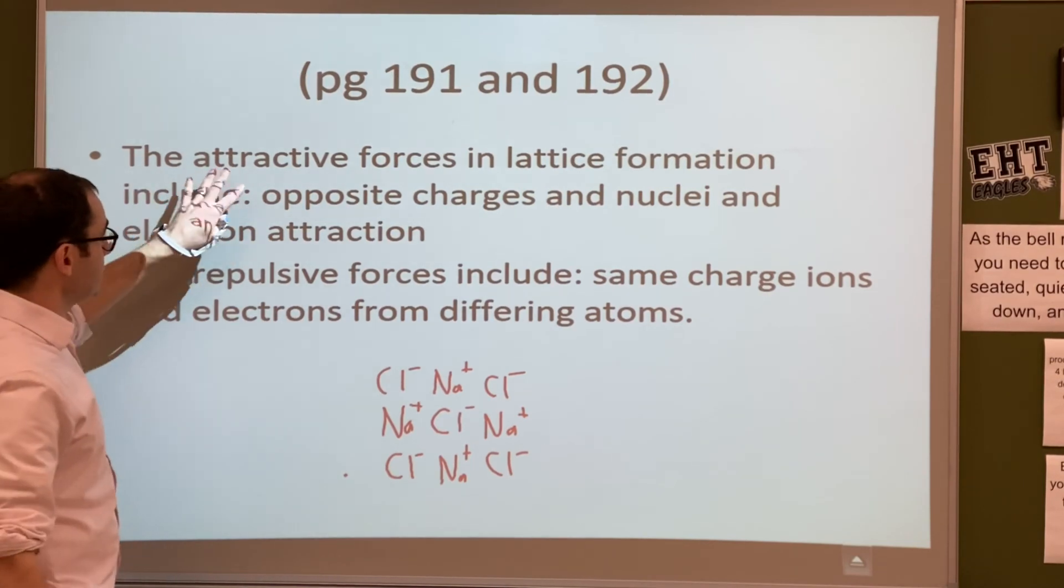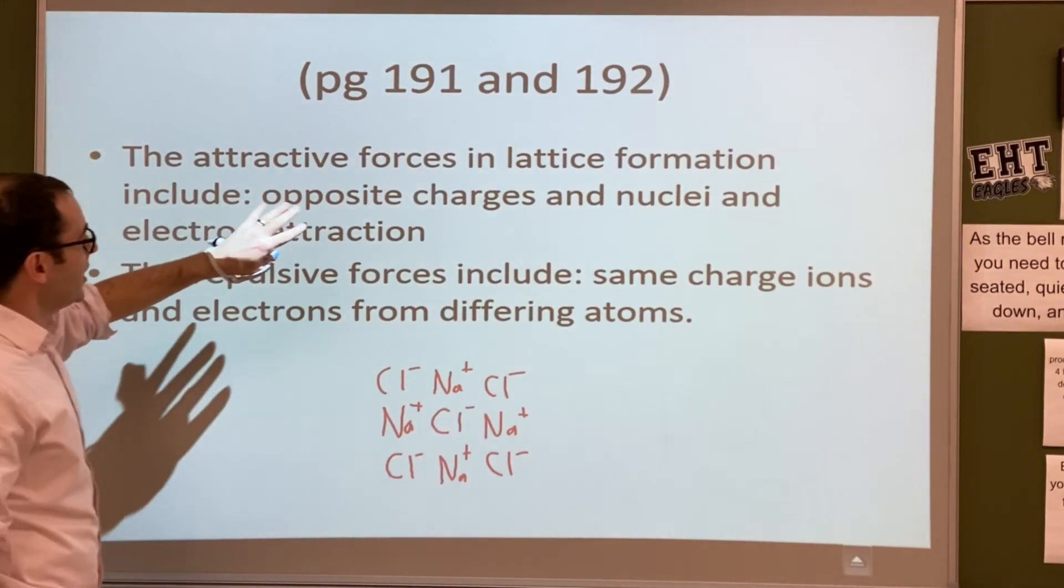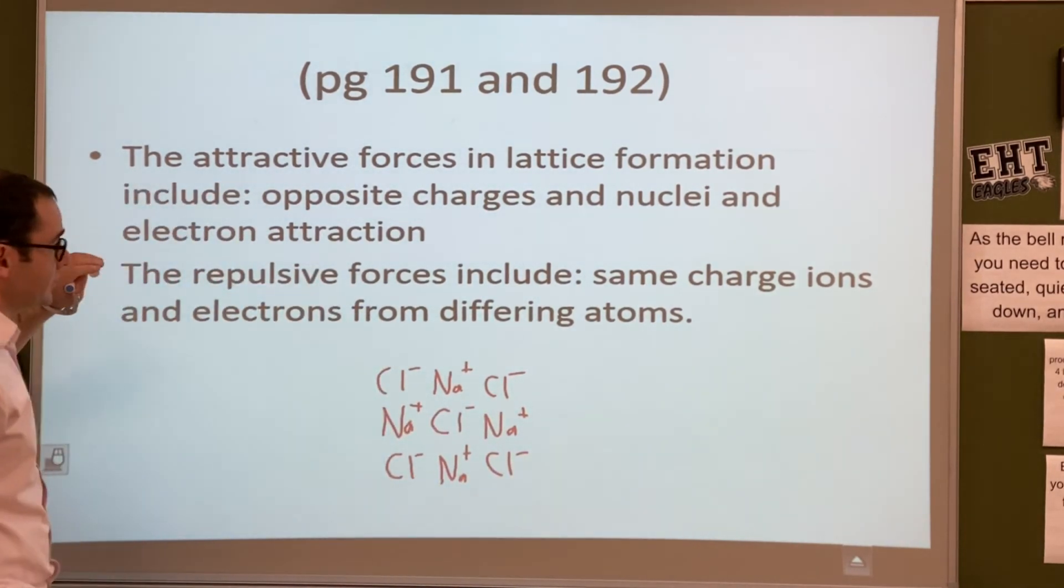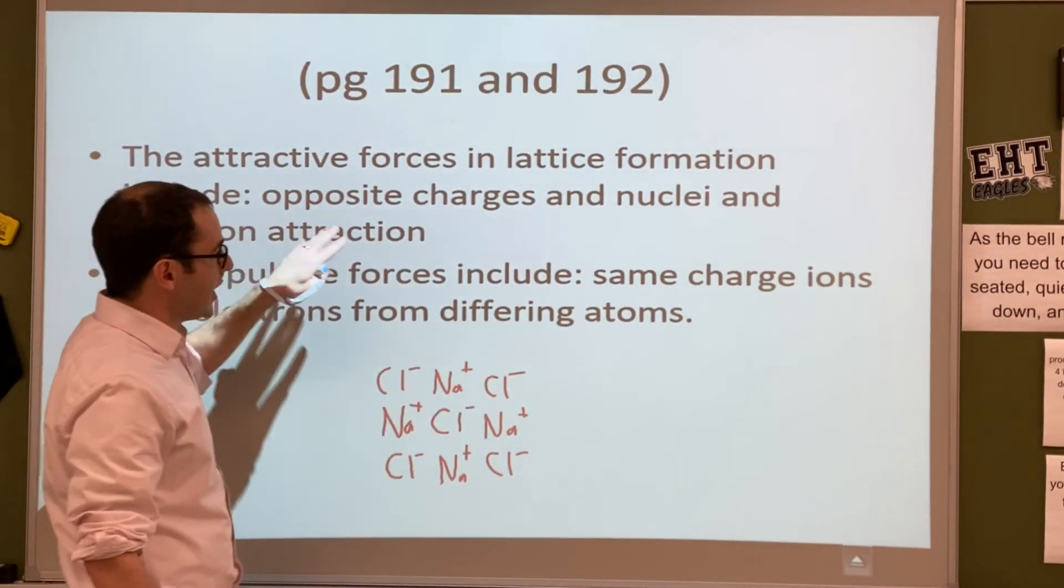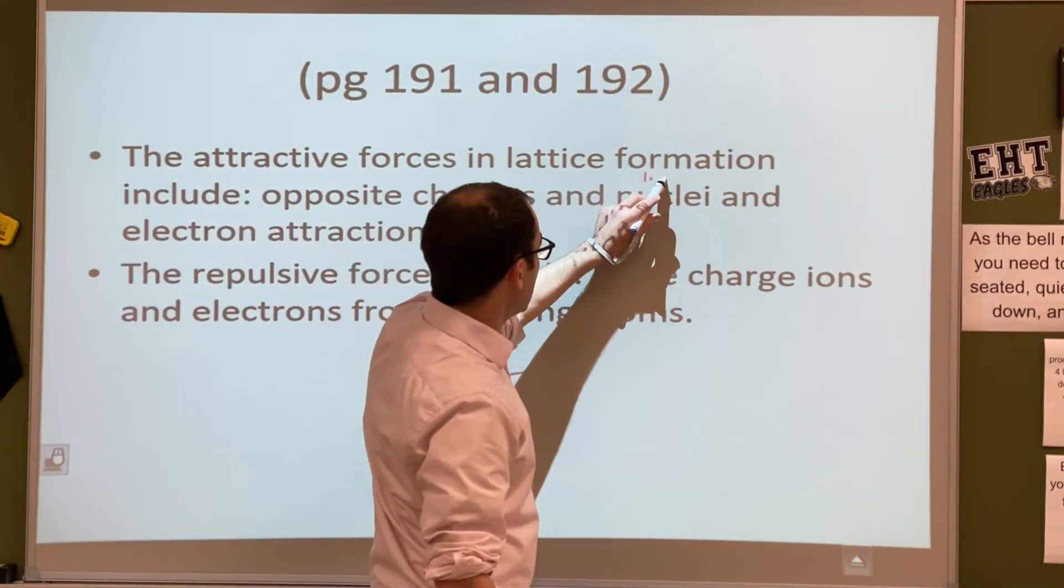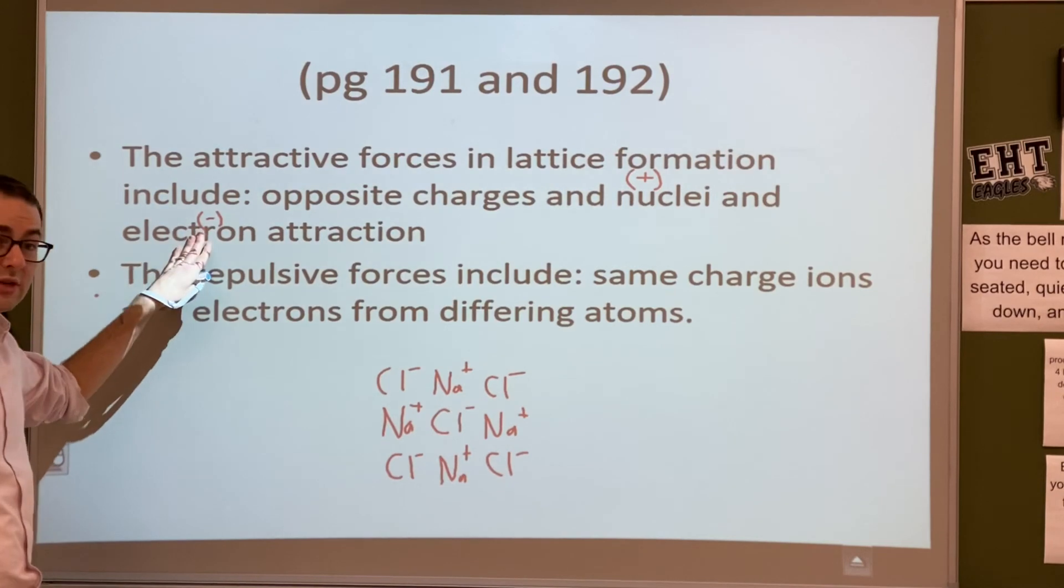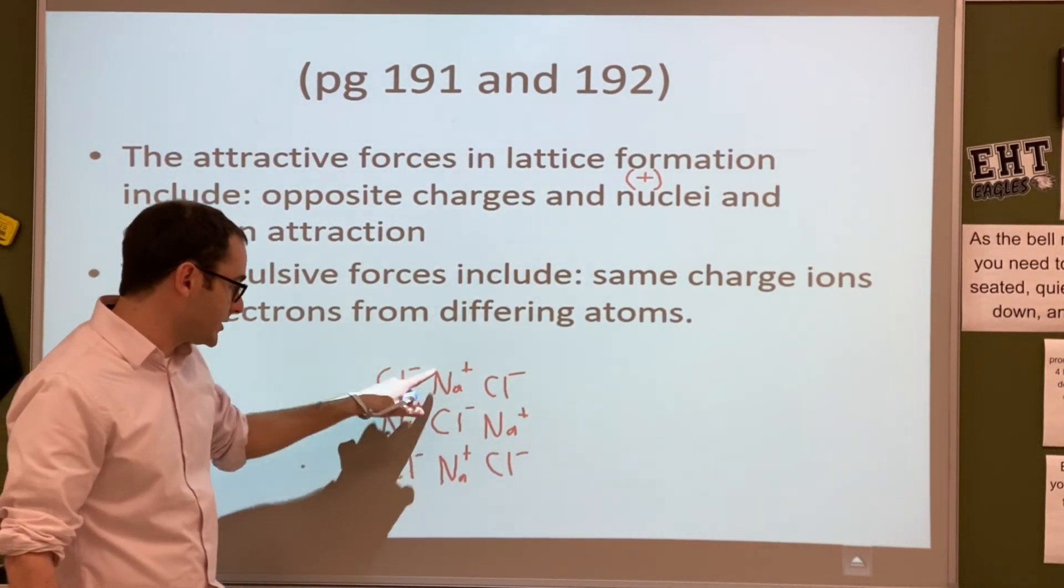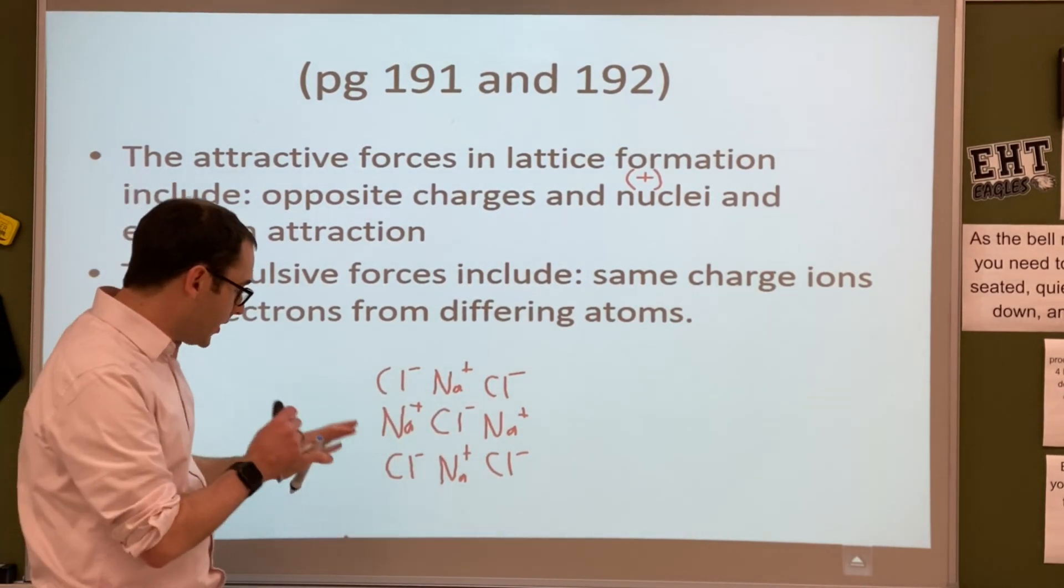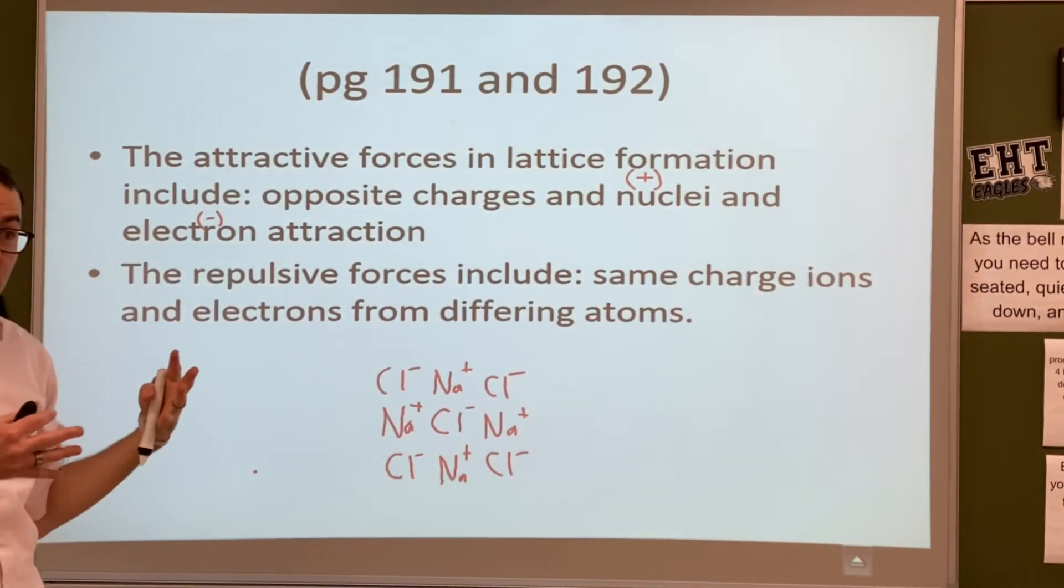Alright? So, let's talk about the forces. Attractive forces in lattice formation include opposite charges. So, this chlorine is attracted to that sodium because they're opposite charges. That makes sense. Another thing that's attractive is the nuclei, which is what charge? What charge is the nucleus always? Positive. Positive. Alright? So, the nucleus is going to be attracted to electrons because electrons are always negatively charged, right? Each of these has a nucleus, right? And each of these has electrons. So, no matter what, the nucleus of one is going to be attracted to electrons of the other. So, you're going to get that attraction in there as well, alright?